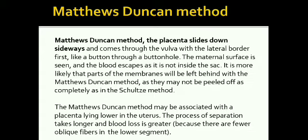The second method is Matthew Duncan's method. In this method, the placenta is separated from the side — the lateral border — and it will show a lateral surface. It is more likely that part of the membrane will be left behind in Matthew Duncan's method, as some membrane can remain in the uterus. Matthew Duncan's method is more associated with a placenta lying in the lower uterus, so if there is placenta previa, you will see Matthew Duncan's method. In Matthew Duncan's method you can see a lot of bleeding, whereas in Schultze's method there is less bleeding.